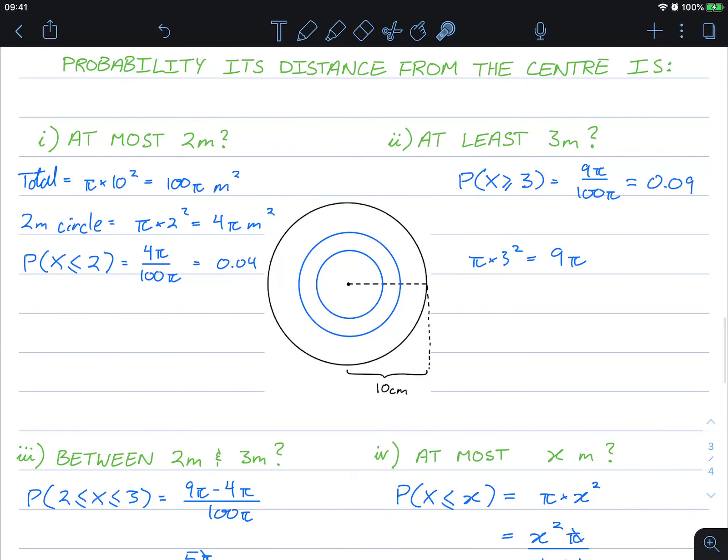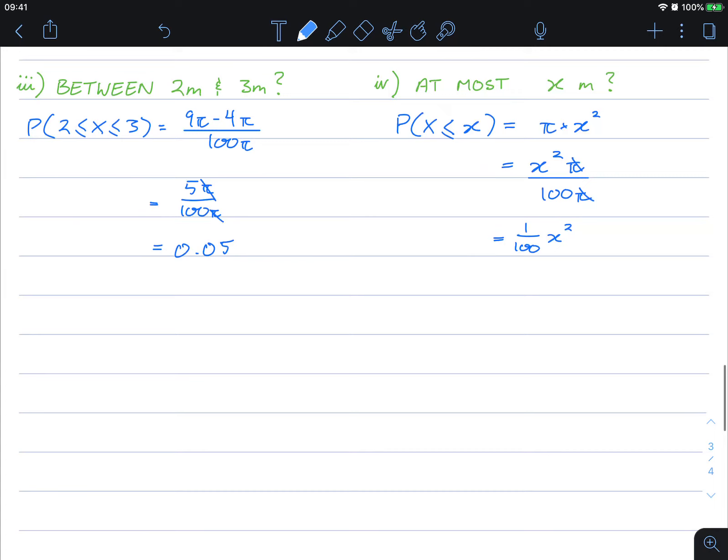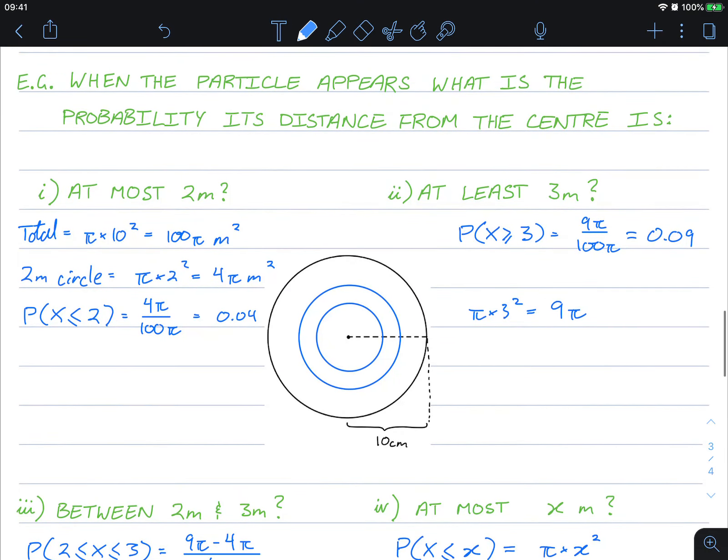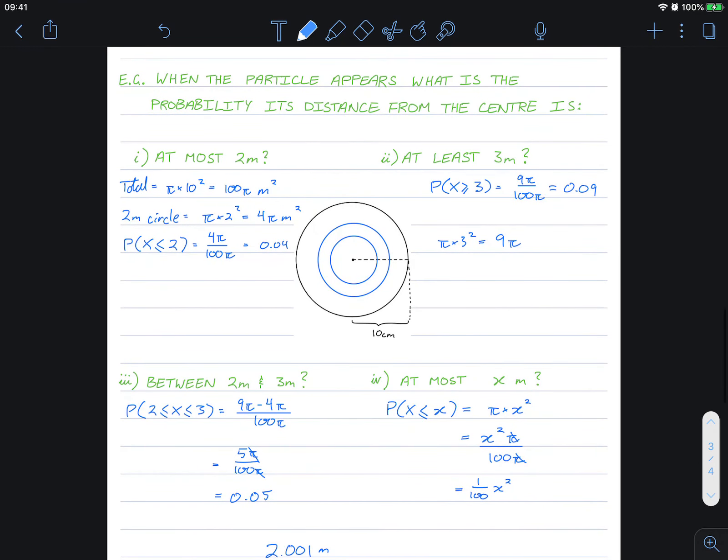So I hope this introduces you to the idea that we're actually going to be creating a function that represents the probability of any value of x. Because in this case, the radius doesn't have to be two, three, or any distinct number. We could have, if we wanted to, 2.001 meters for the radius, or 9.099 meters. This is one example of where we are going to be using continuous probabilities where any value of r, the radius, could be used.